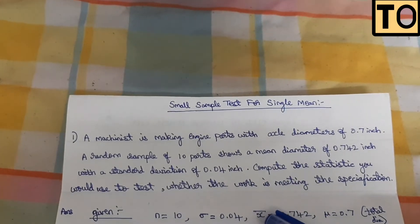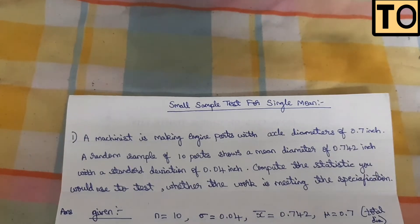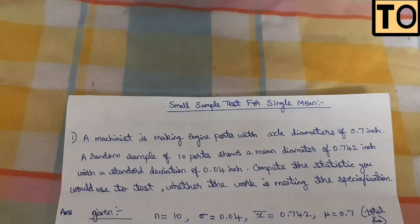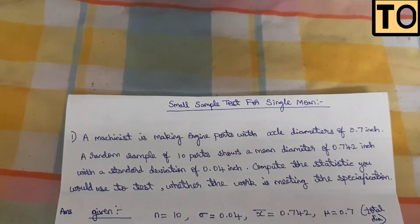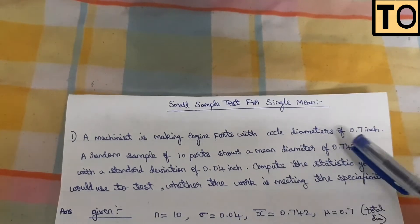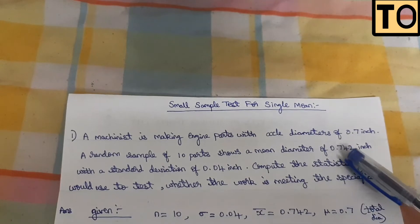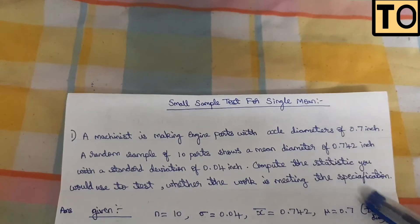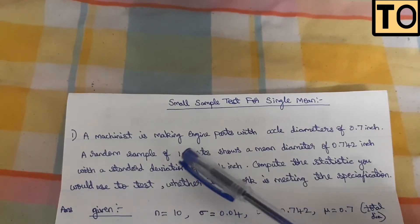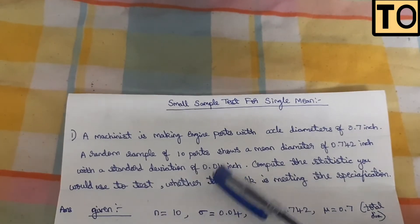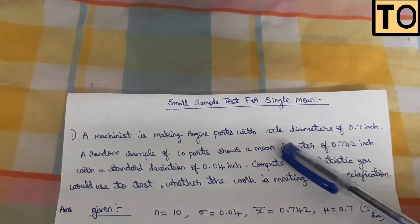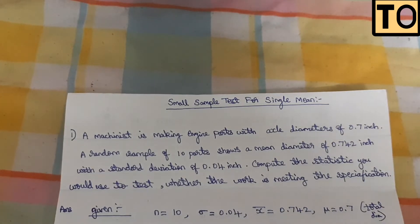The next value is x bar, the sample mean. The x bar is 0.72. The population mean mu is 0.7, which is the specified axle diameter. We will now write these values and proceed to set up the hypothesis.